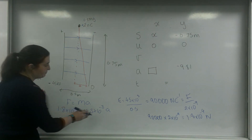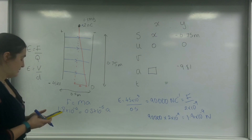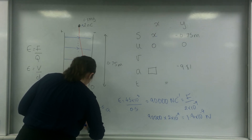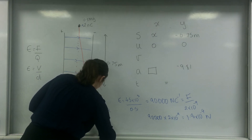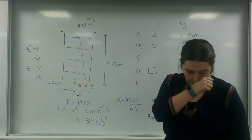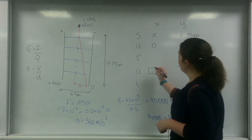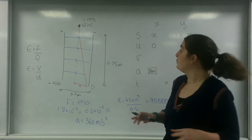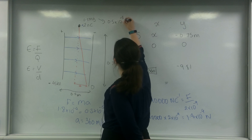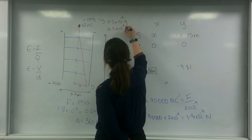Wait — it's 10 to the minus 6 because the mass is in milligrams, and I want it in kilograms. Milligrams is 0.5 times 10 to the minus 3 grams, which means it's 0.5 times 10 to the minus 6 kilograms. So my acceleration is going to be 360 metres per second squared.